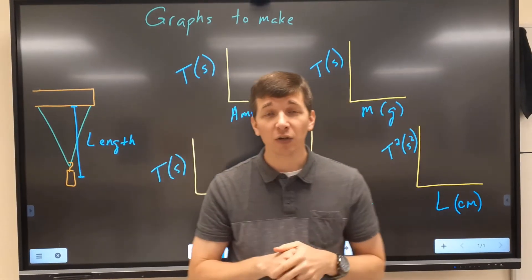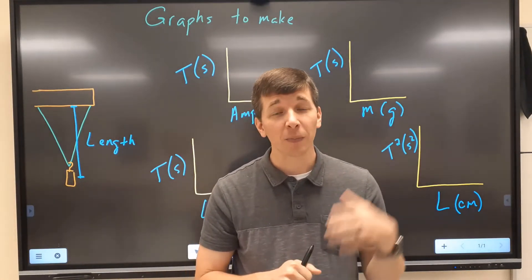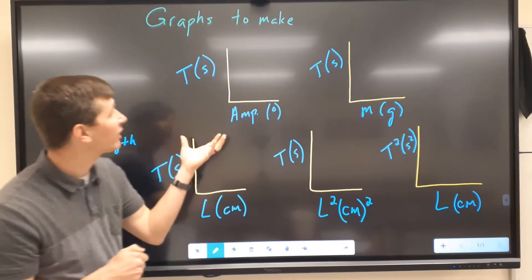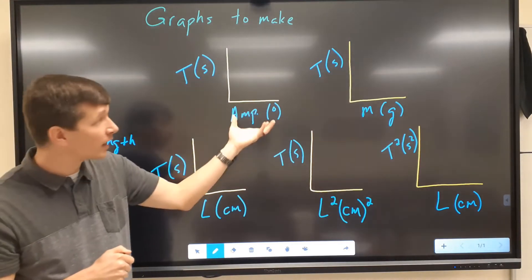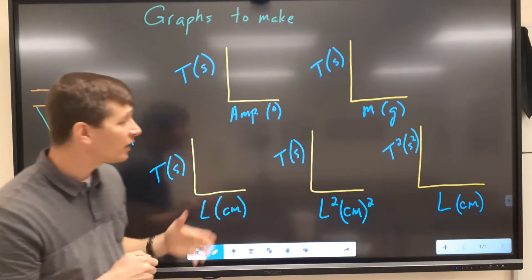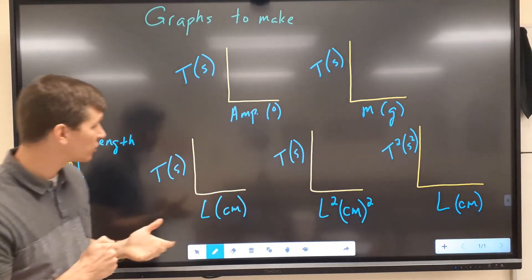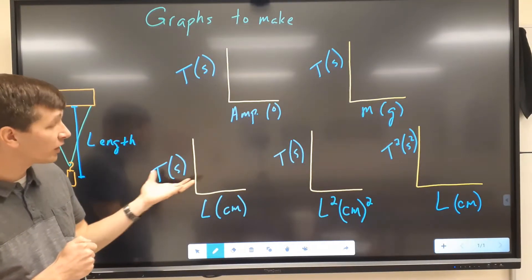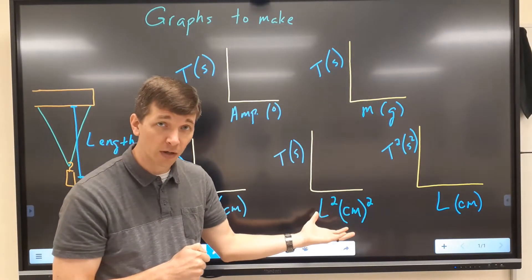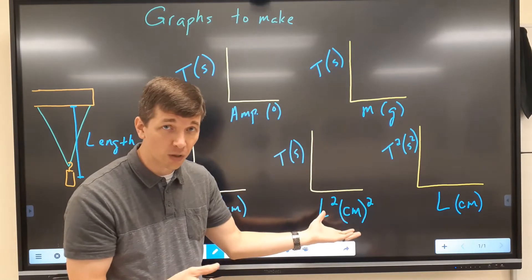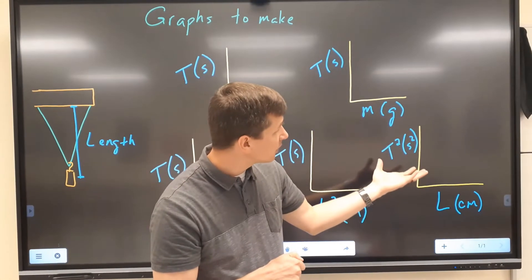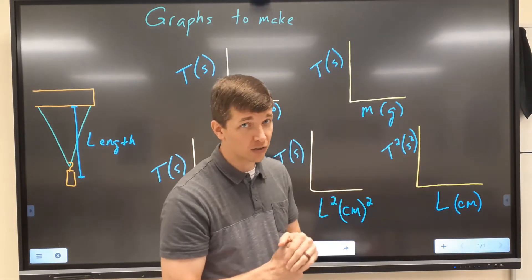We're going to be measuring each of those three variables, and then you're going to be making some graphs based off of those. You're going to make a graph of period versus amplitude, period versus mass. Then with your length and period you're going to make three graphs: period versus length, period versus length squared — so whatever the length of the string is, square that and graph it with the period — and lastly, period squared versus the length.